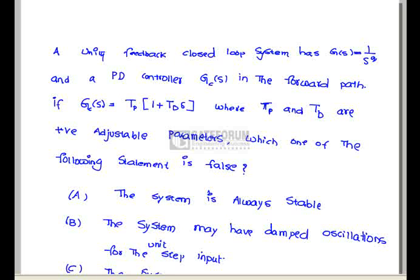And a proportional derivative controller Gc(s) in the forward path equals Tp into (1 plus Td s), where Tp and Td are positive adjustable parameters. Which one of the following statements is false regarding the above unity feedback closed loop system?